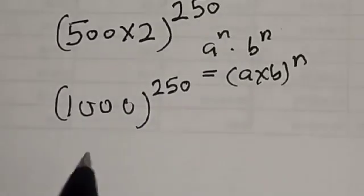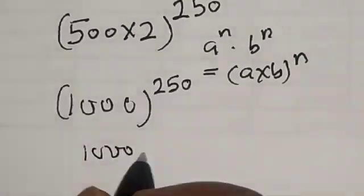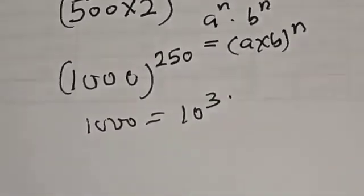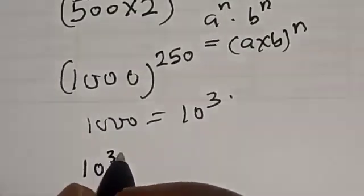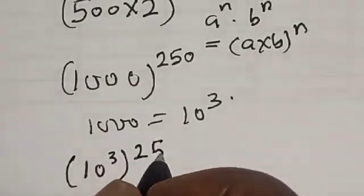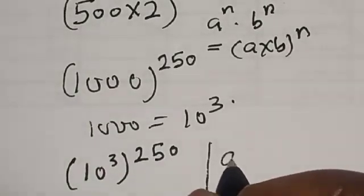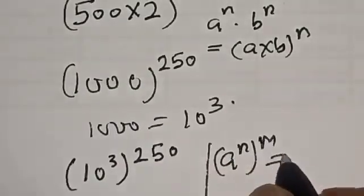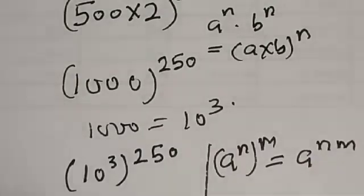But 1000 is 10 raised to power 3. Then we have 10 raised to power 3, raised to power 250. Remember this rule: if you have a raised to power n, raised to power m, this is equal to a raised to power n times m.